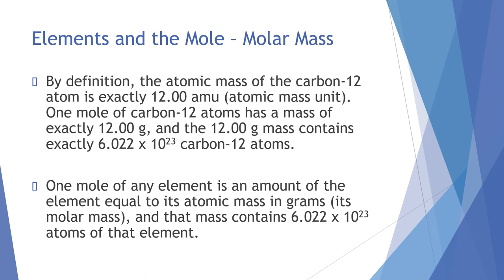So what we're looking at here is by definition, the atomic mass of, for example, the carbon-12 atom is 12.00 AMUs, or atomic mass units. So one mole of carbon-12 atoms has a mass of 12.00 grams, and in that mass of 12.00 grams, which is one mole of carbon-12, is 6.022 times 10 to 23 carbon-12 atoms.